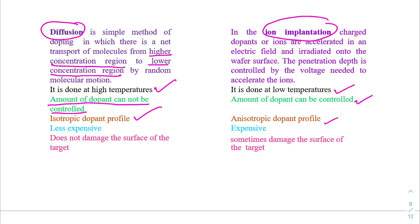Diffusion method is less expensive while ion implantation is expensive because specific equipment is required. Diffusion method does not damage the surface of the target but sometimes ion implantation method damages the surface.